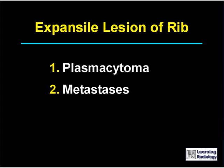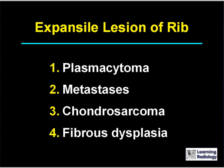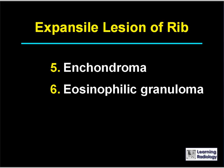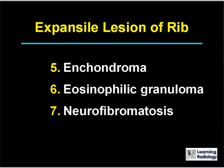The causes of an expansile lesion of rib include plasmacytoma, metastases, chondrosarcoma, fibrous dysplasia, enchondroma, eosinophilic granuloma, and rarely neurofibromatosis.